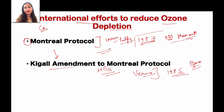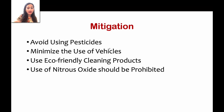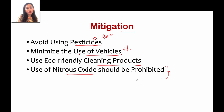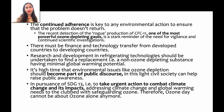For mitigation — how we can stop ozone depletion: reduce the use of pesticides because they generate chemical compounds that deplete ozone; reduce vehicle emissions like sulfur compounds and other ozone-depleting compounds; use eco-friendly cleaning products; and minimize nitrous oxide emissions so that we can stop further ozone depletion.